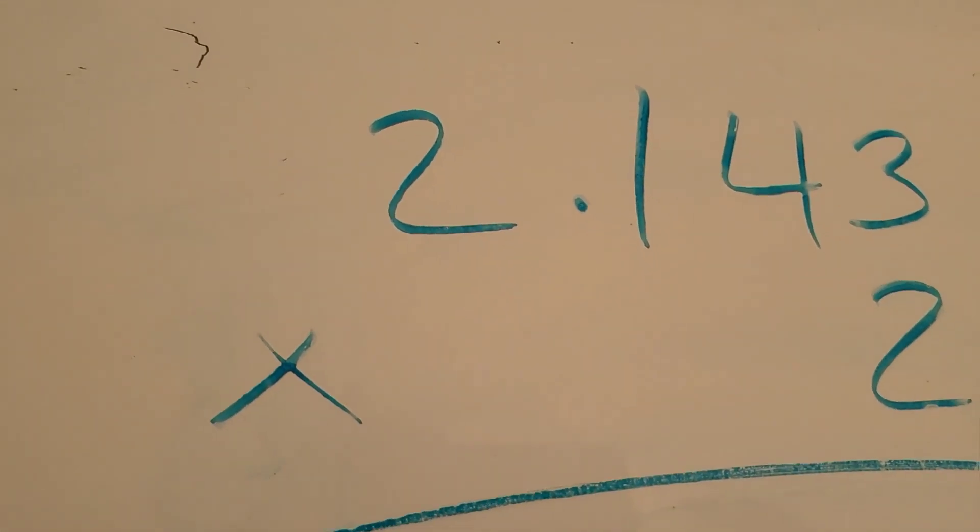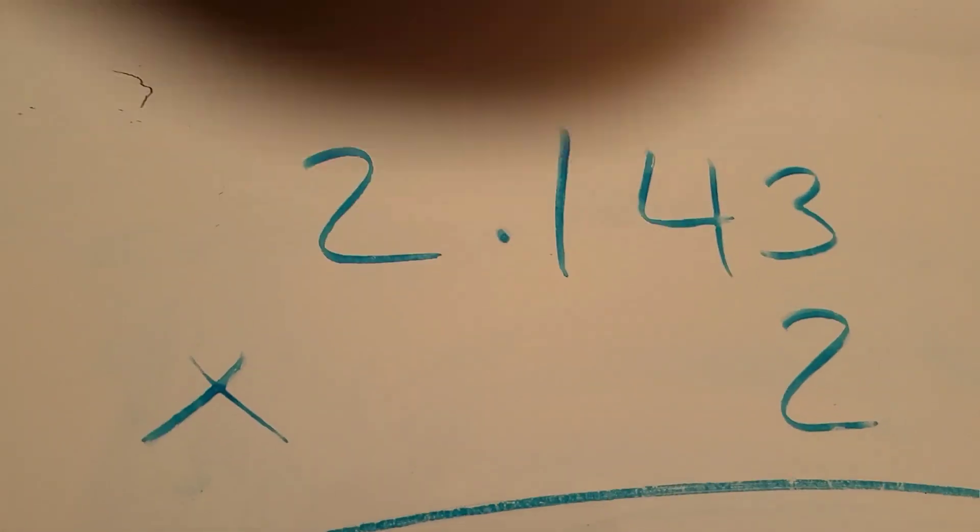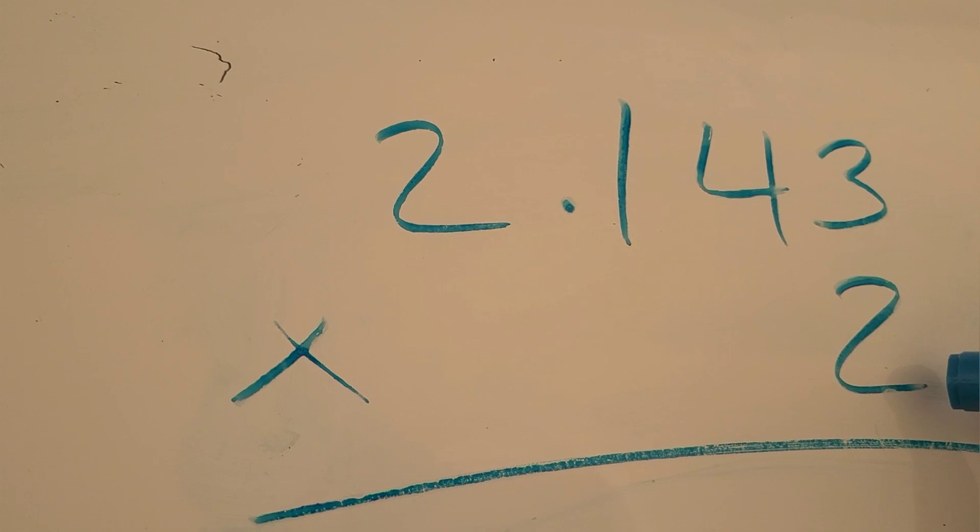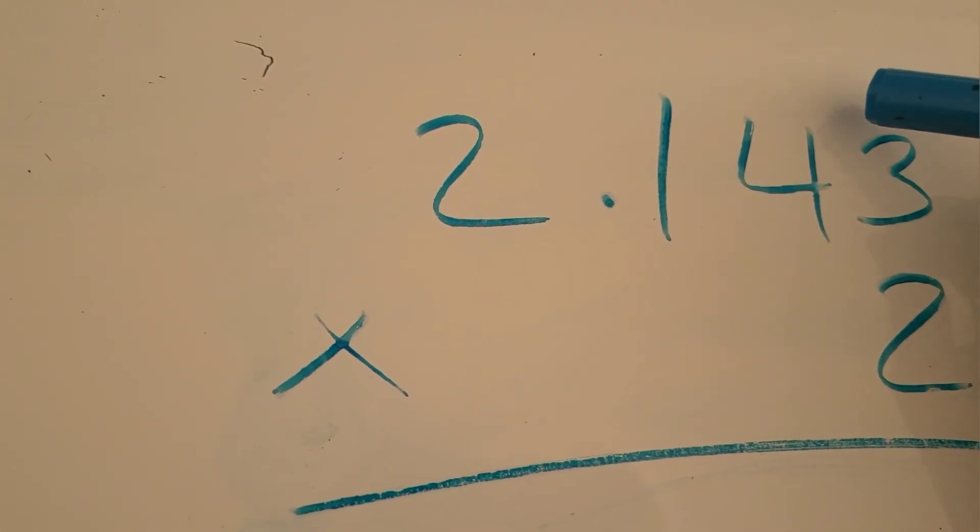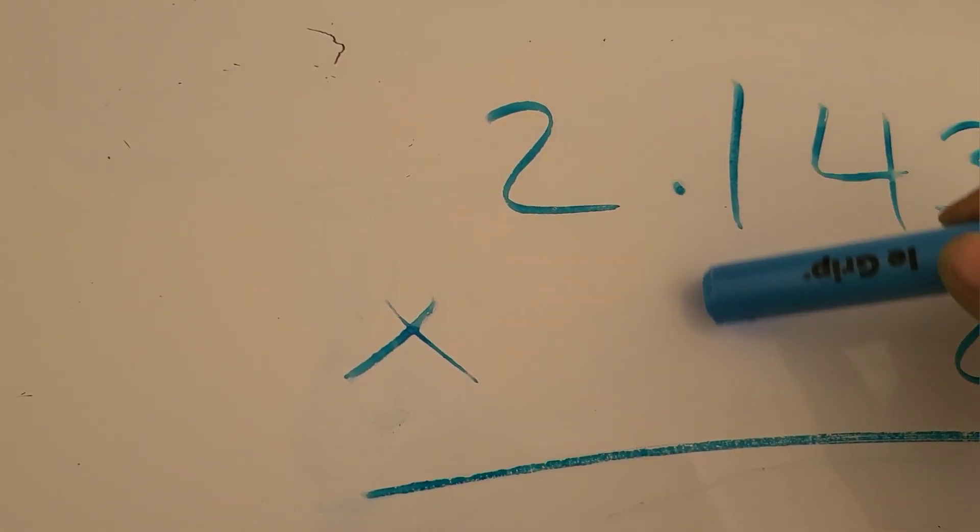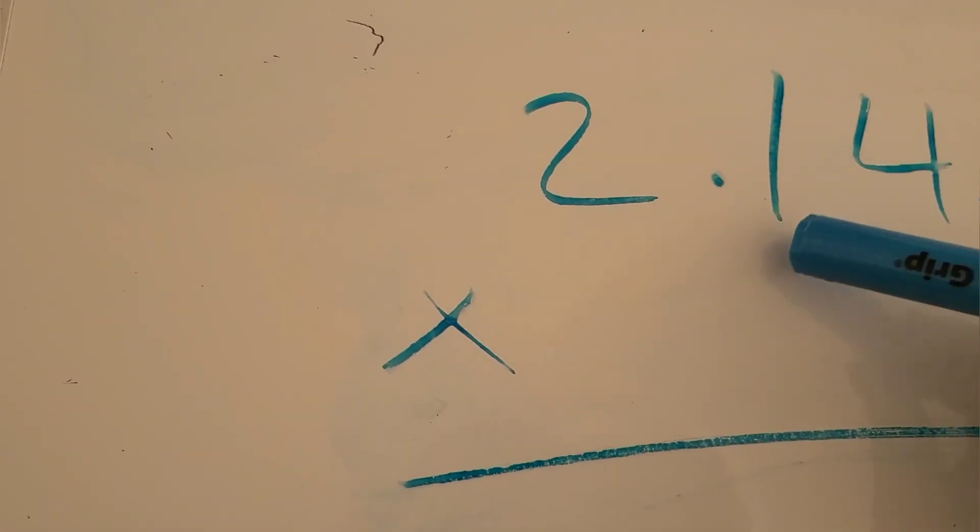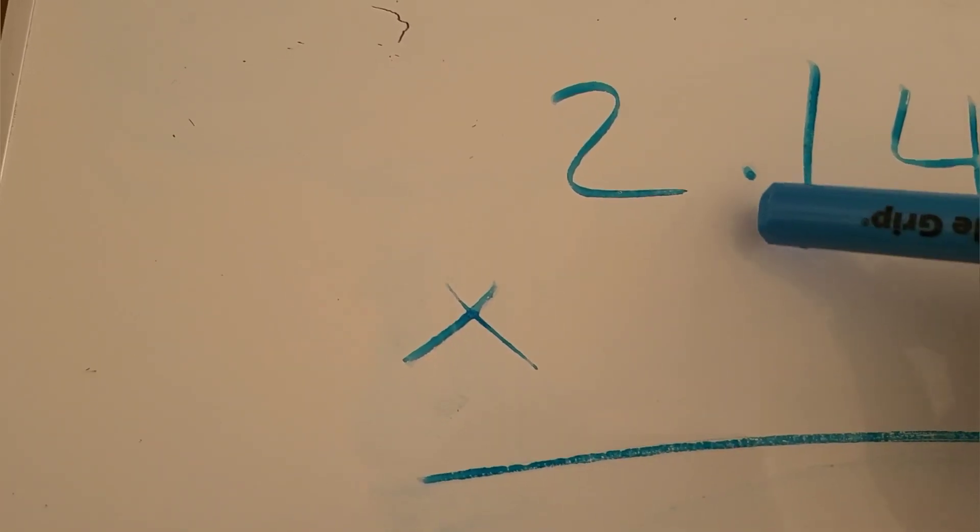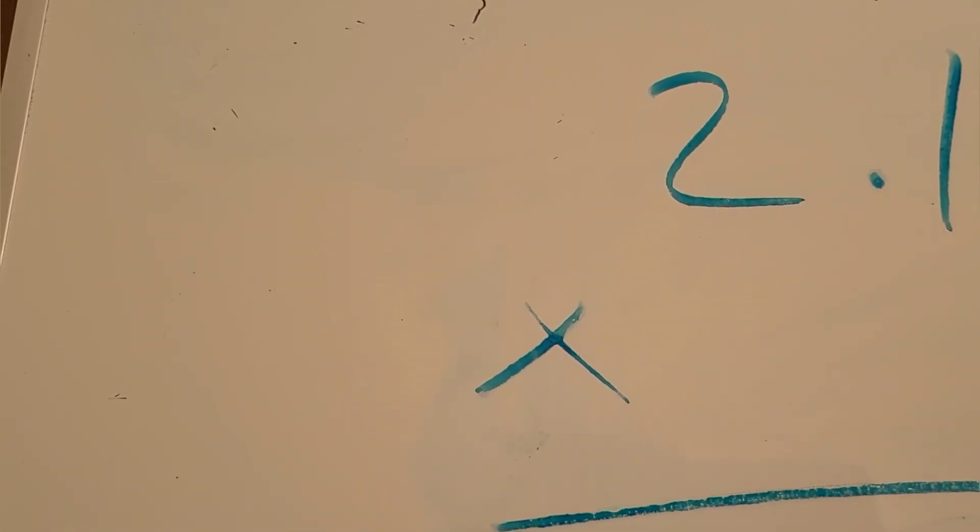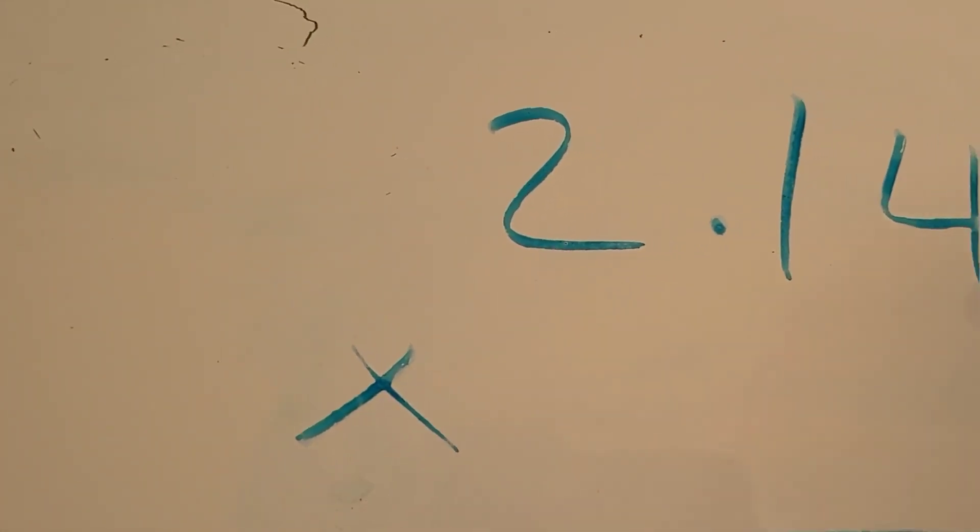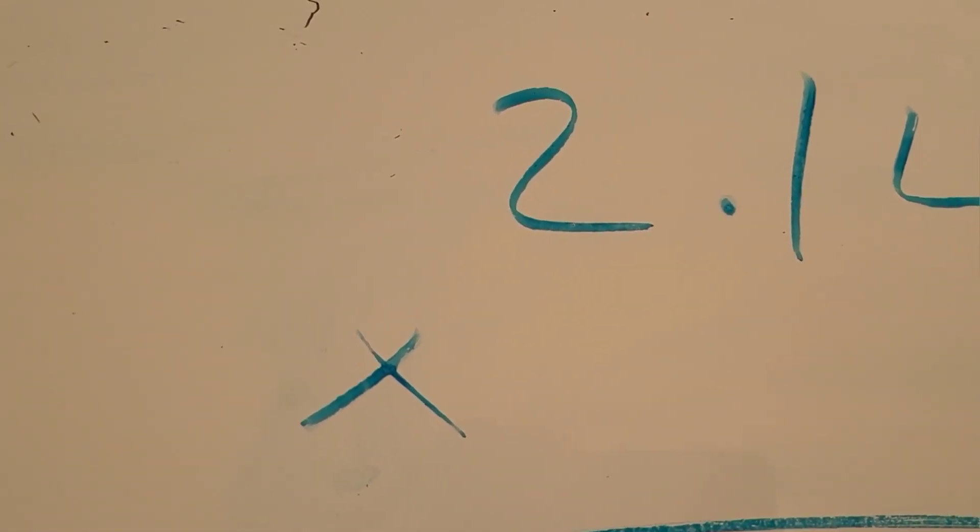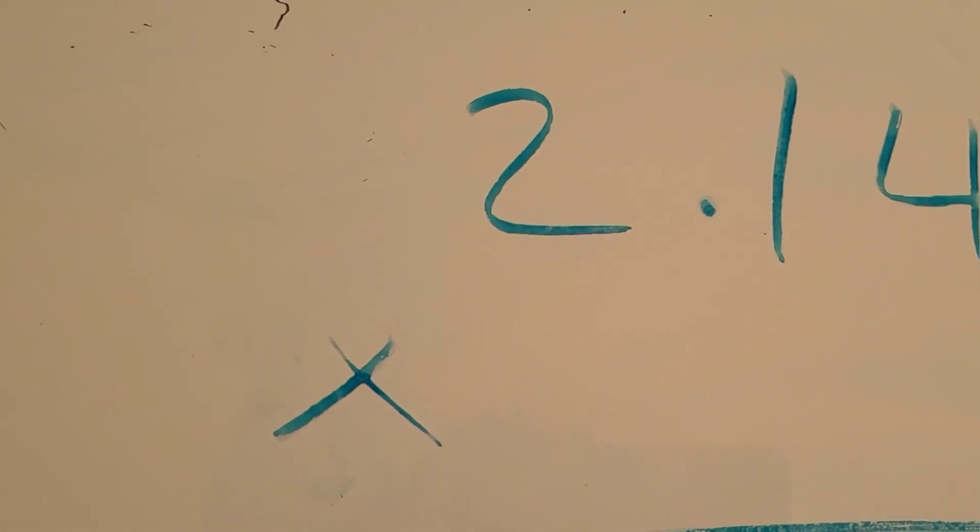The first thing we're going to do is multiply 2 by 3. This is basically like your ones column. This is like your ones, your tens column and hundreds. As you could see, this is 143, so we're in the hundreds column. You have the decimal point here. This is basically like 2.143. You have to always remember to add in your decimal point after you put in the answer.